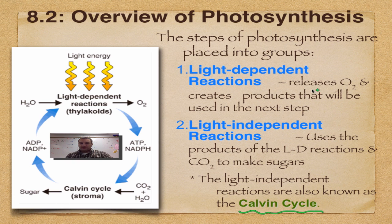The light dependent reactions release oxygen and create two products that move on to the next step: ATP and high energy electrons. These are going to help power the Calvin cycle. Now the Calvin cycle is going to use these two products to take carbon dioxide and turn it into sugar. And remember that sugar is glucose - C6H12O6.